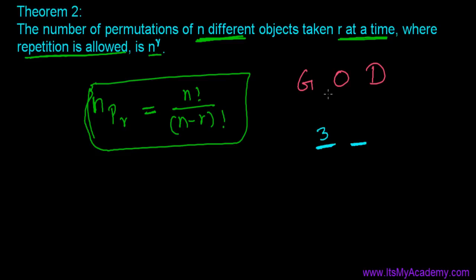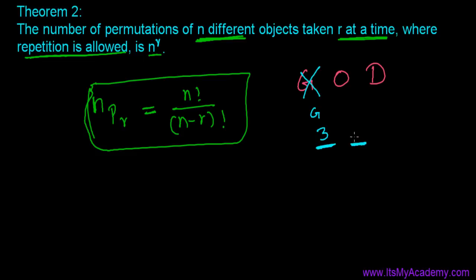Once I fill the first position, I cannot repeat that letter. So if I write G first, it's now used, and I have two remaining options — O or D — for the second position. That gives three times two, which is six ways to arrange letters of GOD in two places without repetition.